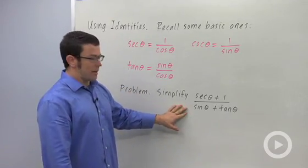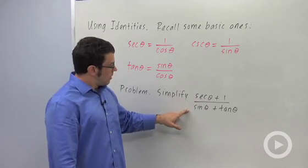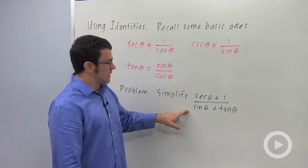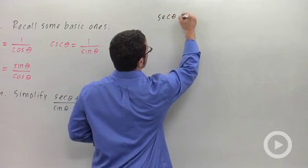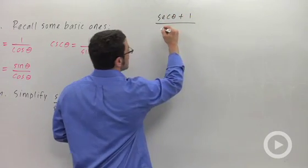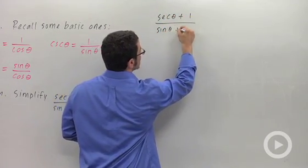So let's use that to simplify secant theta plus 1 over sine theta plus tangent theta. I'll write that over here. Secant theta plus 1 over sine theta plus tangent theta.